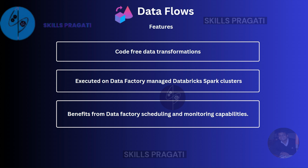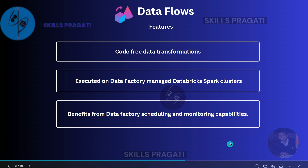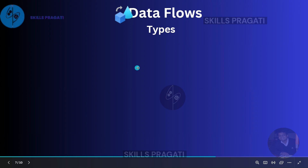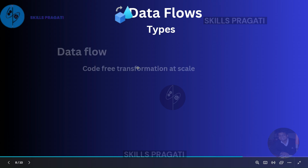In terms of types, there are two types of data flow. The first one, which is generally referred to as data flow, is now called the mapping data flow. This is generally available and is the one we are going to focus on in this session. It is the recommended type of data flow for creating transformations when your schema is fixed and you know the transformation logic up front.